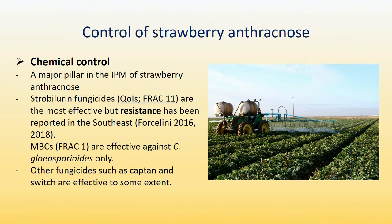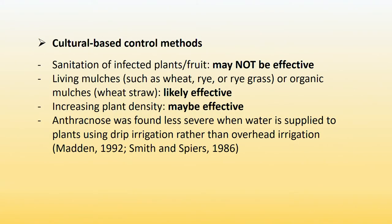Other fungicides such as Captan and Switch are effective to some extent. They're not as effective as strobilurins if resistance is not a concern, because Captan and Switch do not have strong systemic activity. Other cultural control methods include sanitation of infected plants and fruit. However, some studies showed this method might not be effective, and it's quite labor-intensive and may not be economically feasible.